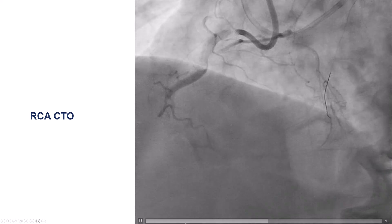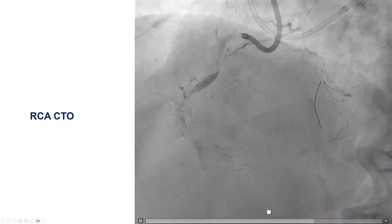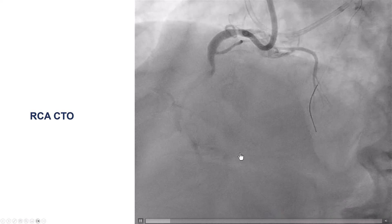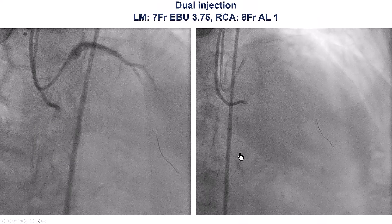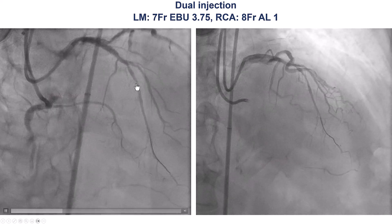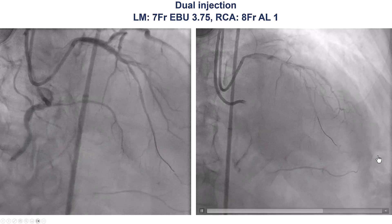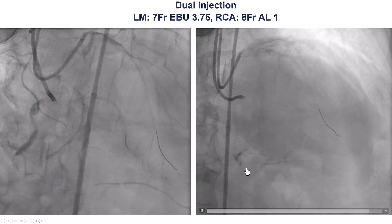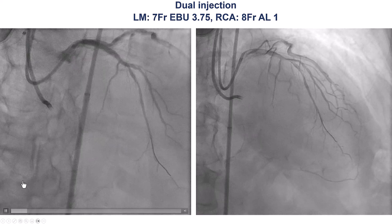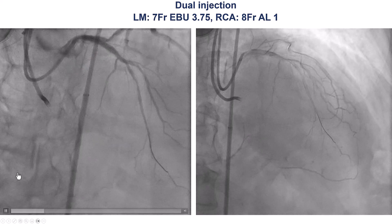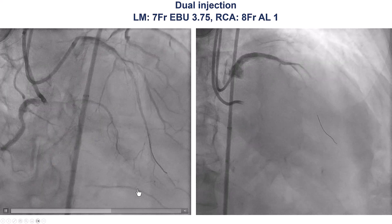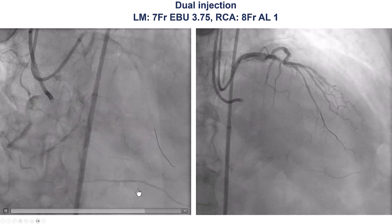This is a diagnostic angiogram. There is heavy calcification of the right coronary artery. We can see a faint distal filling. And this is a dual injection. There is a mid-vessel lesion, with an epicardial collateral coming from the diagonal branch going to the PDA. The occlusion itself seems to be relatively short. You can see the vessel outline even before the contrast goes in, showing the severe calcification.